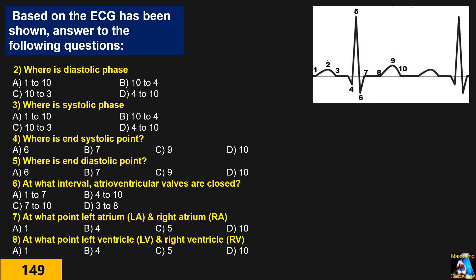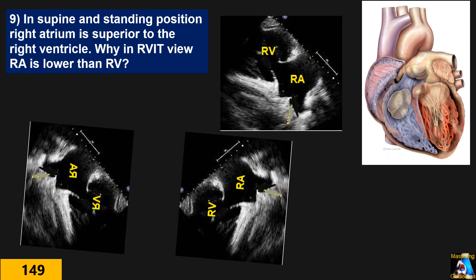Question number 2 to 8: here we have an EKG. Based on the EKG and the spot that has been marked and pointed out, you have to answer all of these questions — where is the diastolic phase, from where to where, and where is the systolic phase. Pause it, read it by yourself, and write your answers.